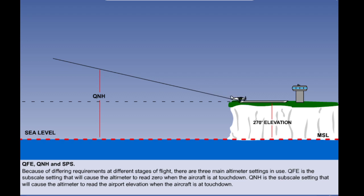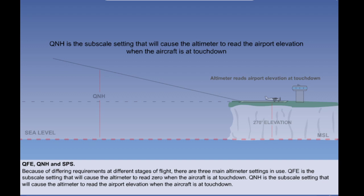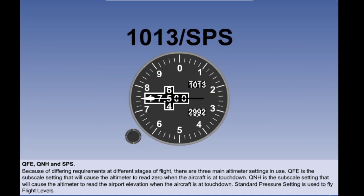The definition to be used is always: QNH is the subscale setting that will cause the altimeter to read the airport elevation when the aircraft is at touchdown. Standard pressure setting, or 1013, is what we set when required to fly flight levels. Flight levels are always given in hundreds of feet, and usually only five hundreds and whole thousands of feet are used. Thus 17,500 feet becomes flight level 175. This is a shorthand way for the air traffic controller to say: fly at 17,500 feet on a pressure setting of 1013 hectopascals.